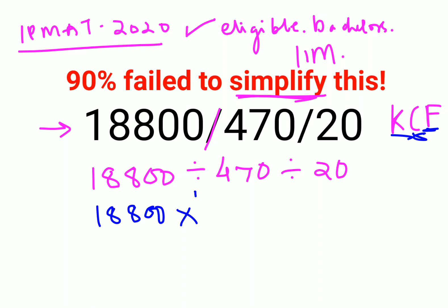So we'll flip or take the reciprocal of 470, which is 1 upon 470. The same goes for 20.